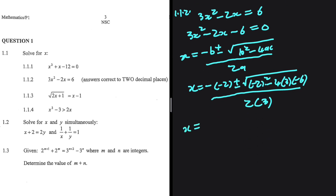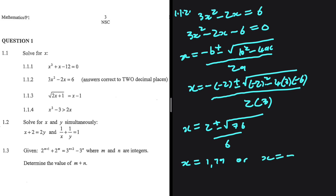So x equals minus multiplied by minus 2, which gives plus 2, plus or minus the square root of b squared minus 4ac. 4 plus 72 is 76, everything divided by 6. So x equals 1.79 or x equals minus 1.12.